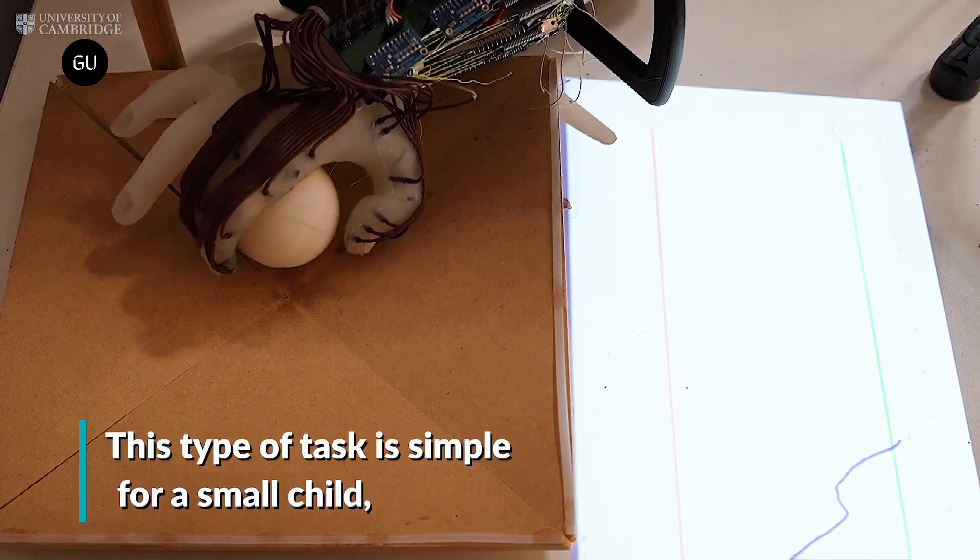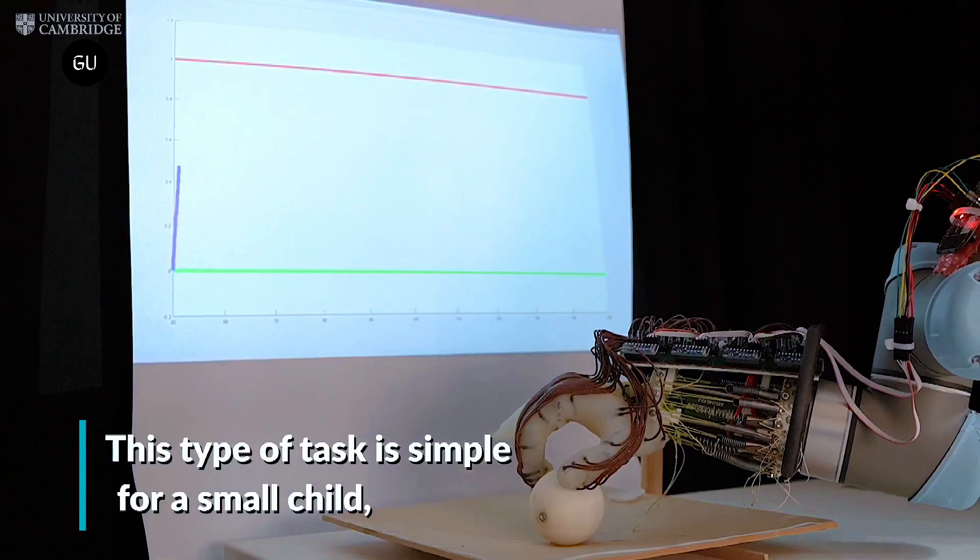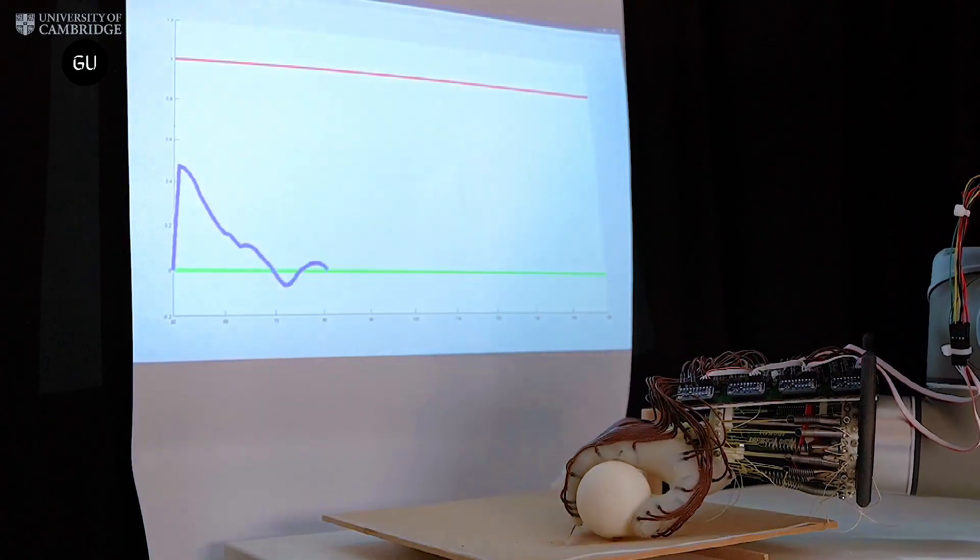Grasping objects of varying sizes, shapes, and textures poses a significant challenge for robots, but Cambridge researchers have overcome this issue by focusing on passive movement.